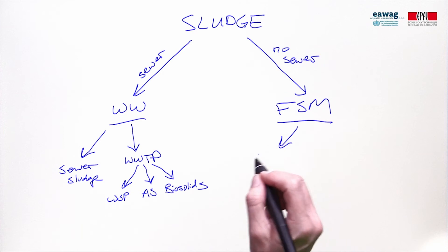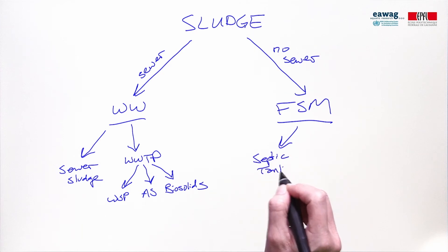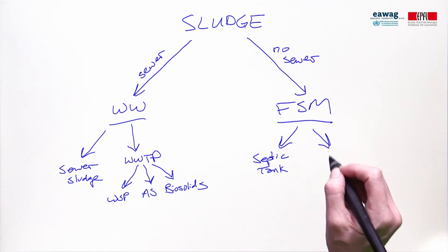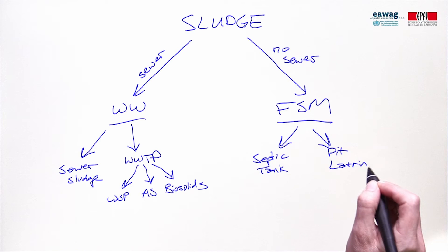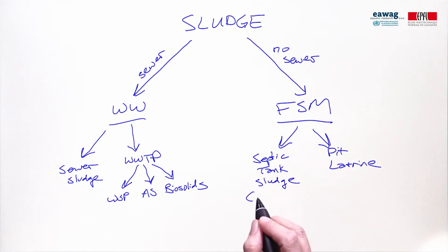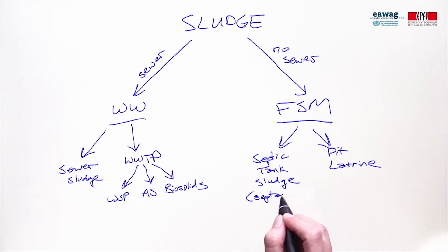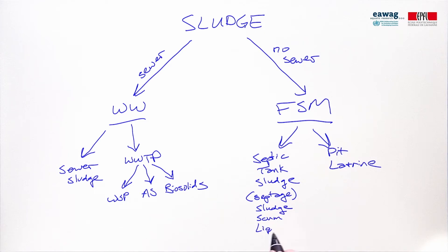Types of on-site technologies can include septic tanks and pit latrines. Septic tank sludge is also commonly referred to as septage. It includes the sludge that's in a septic tank, the scum layer, and also the liquid that's in there while it's being emptied.